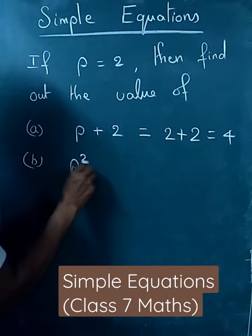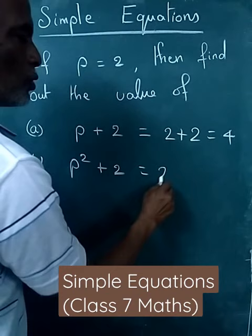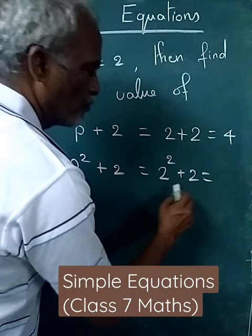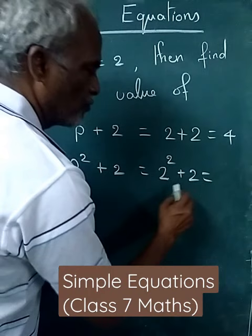P squared plus 2. That means p value is 2, so 2 squared plus 2. Now, 2 squared is 4, and 4 plus 2 is equal to 6. Thank you.